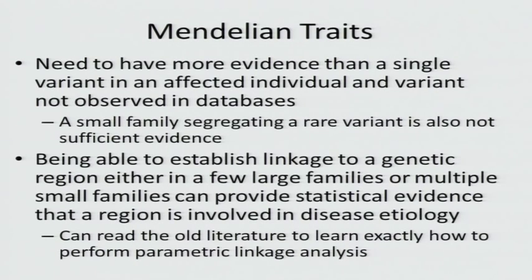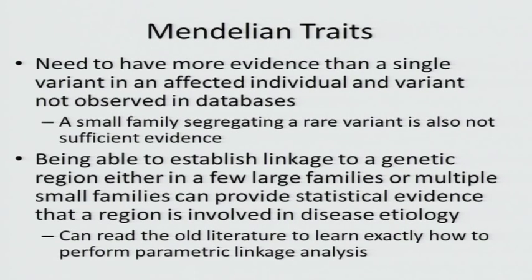How about Mendelian traits? We really need more evidence than a single variant in an affected individual that is not observed in databases. Also, if we have a small family segregating a rare variant, it is not sufficient evidence that the variant is causal—you're going to have many variants just by chance segregating in small families. One thing that is really helpful is if we go back a decade or two and use linkage analysis to implicate a region.